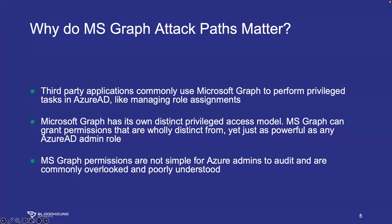Additionally, Microsoft Graph is its own distinct privileged access model, compliant with the model of delegated permissions and app roles that Microsoft makes available to any app publisher. MS Graph can grant permissions that are wholly distinct from yet just as powerful as any other Azure AD admin role, including global administrator. And those app role assignments are not very easy to audit — Azure admins have a tough time auditing these. The app roles are confusing, very commonly overlooked, and the impact of those app role assignments is not very well understood. This is a perfect combination for attack paths to emerge, persist, and get worse over time.